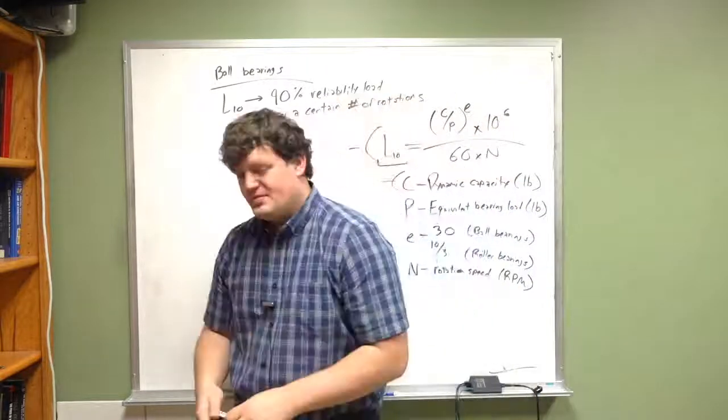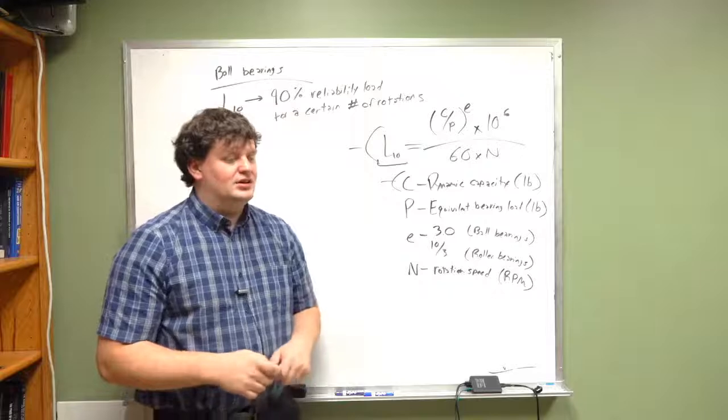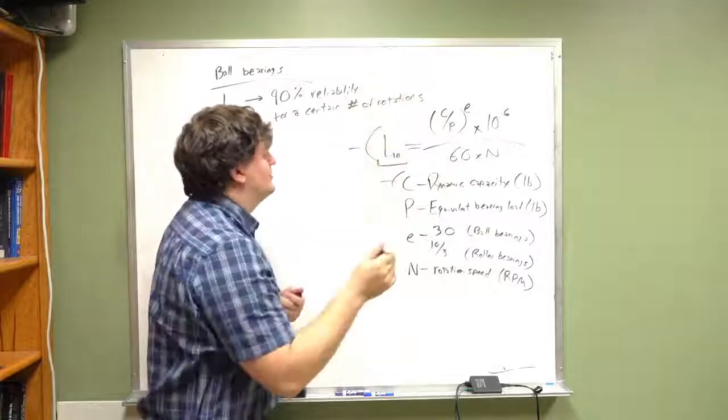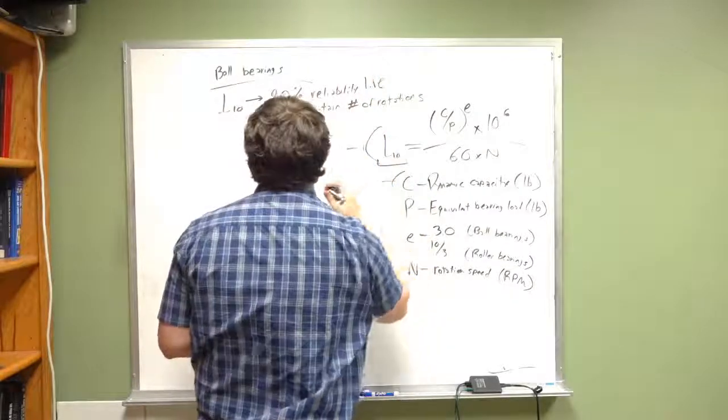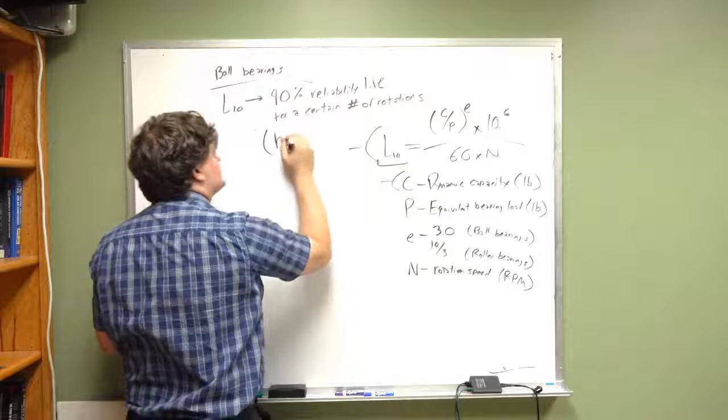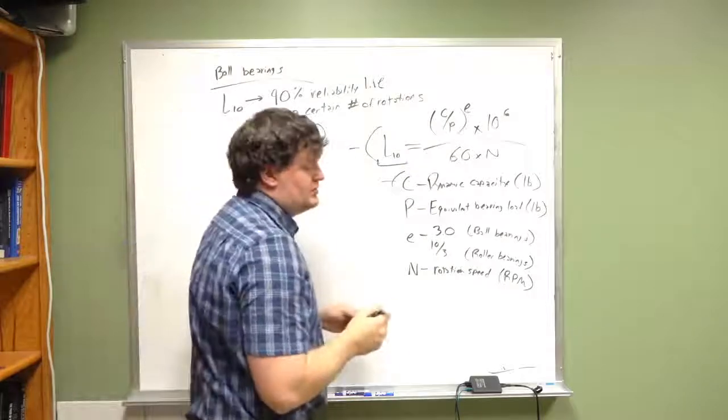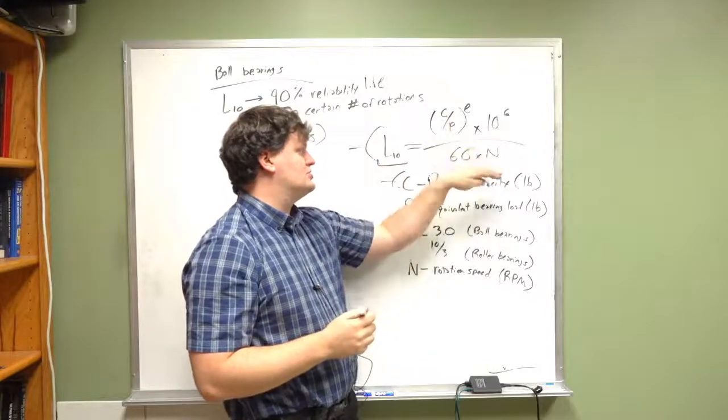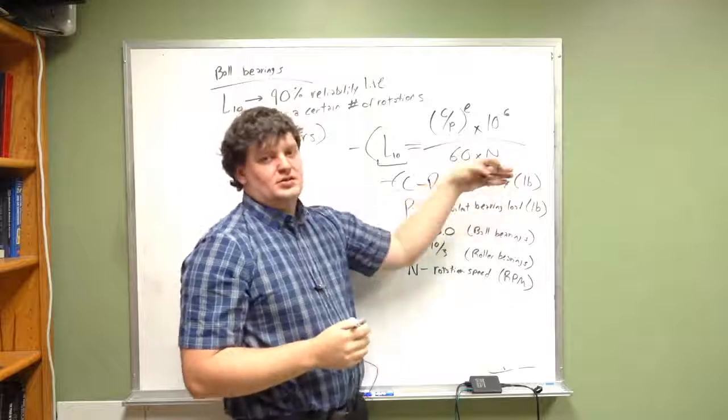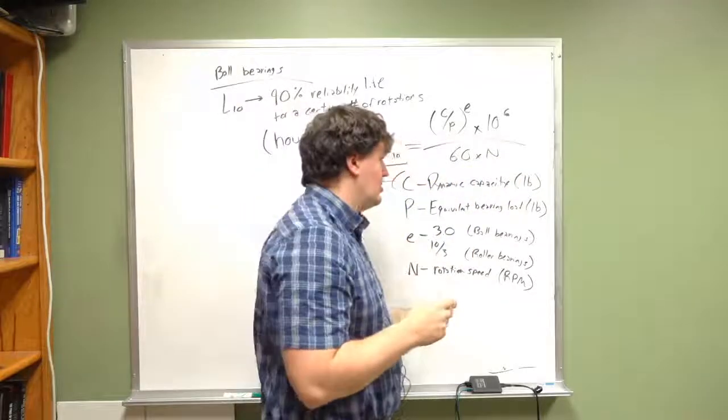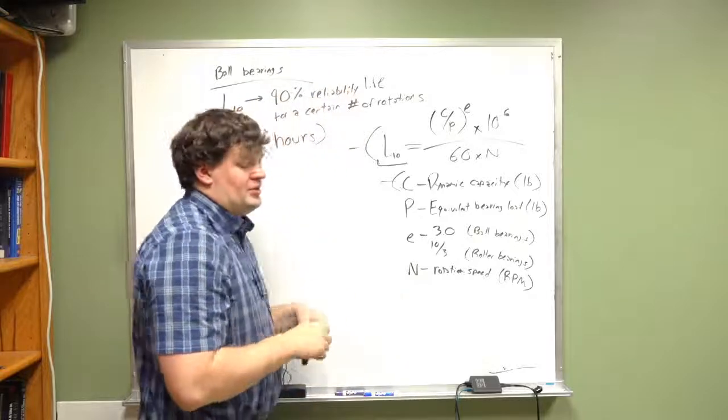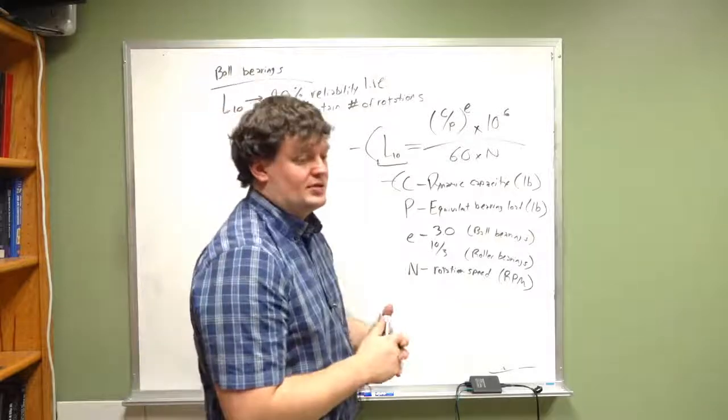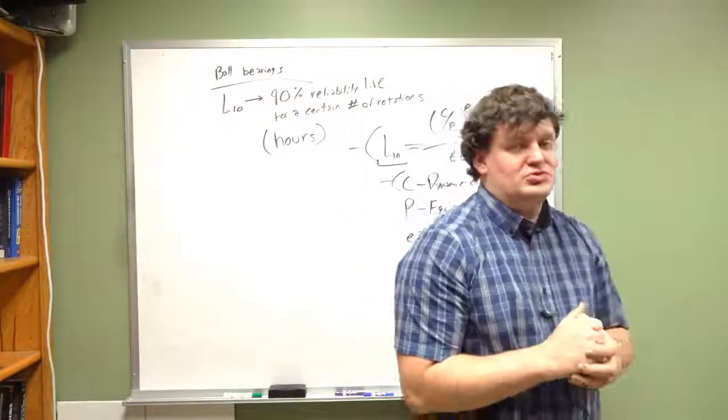Okay, I'm going to make one clarification from my last lecture. When I wrote load, this is actually life. L10 is measured in hours. So this is the life of a component in hours, whereas these are your two load conditions, this is your axle speed, and all of those other components are the same. My apologies, I should have written life instead of load. I just got really excited talking about bearings. I guess I just really love things that spin.